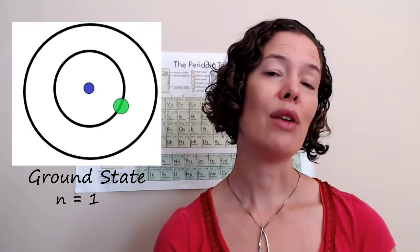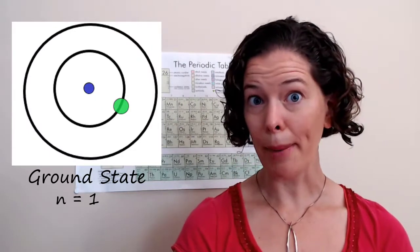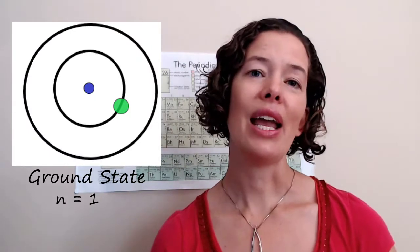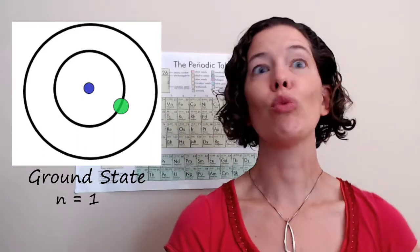So what Bohr also did was he introduced the idea of ground state electrons and excited state electrons. So a ground state would be the lowest energy orbital that an electron can have. So let's say for example we only have one electron. The ground state would be N equals one. An excited state would be N is greater than one.